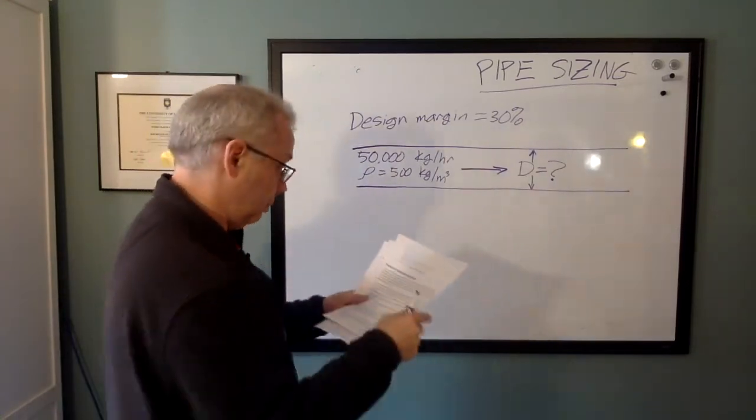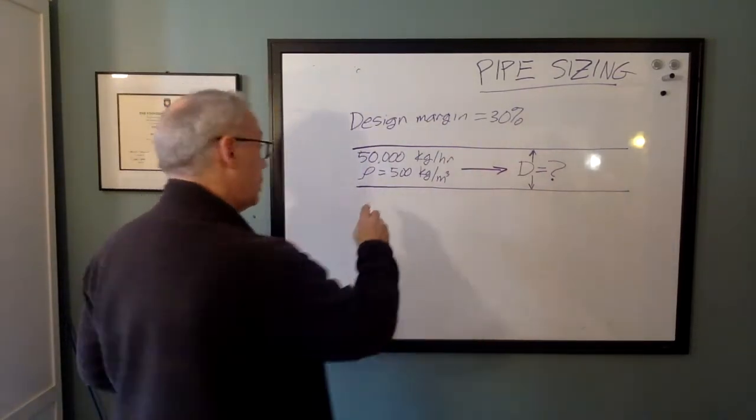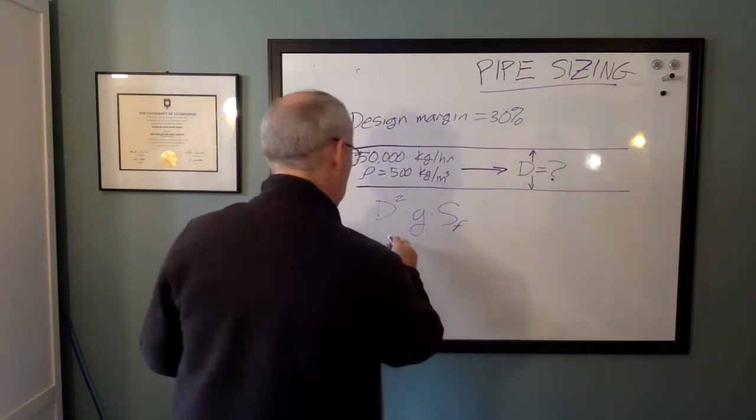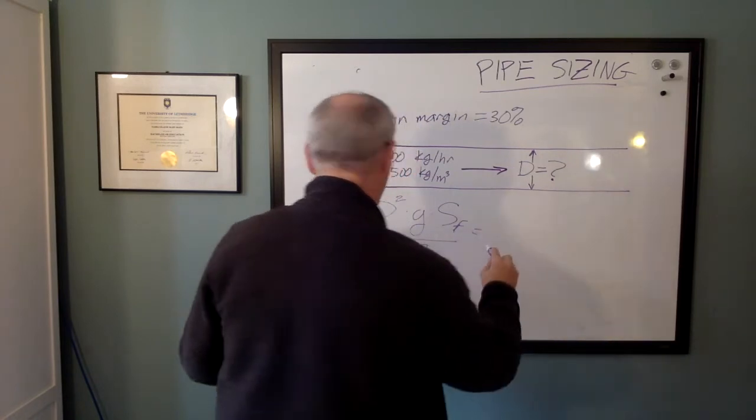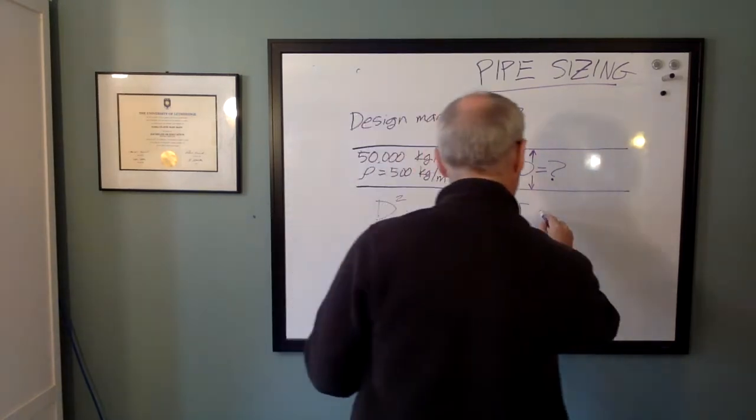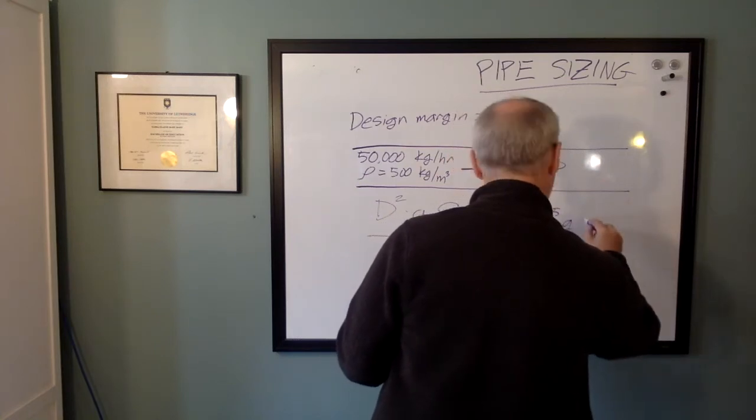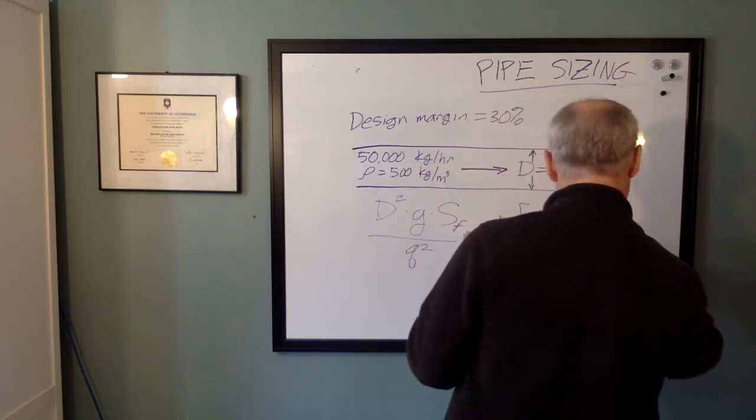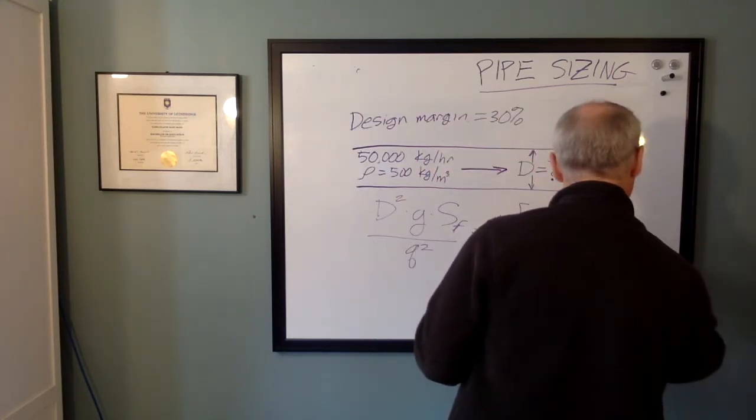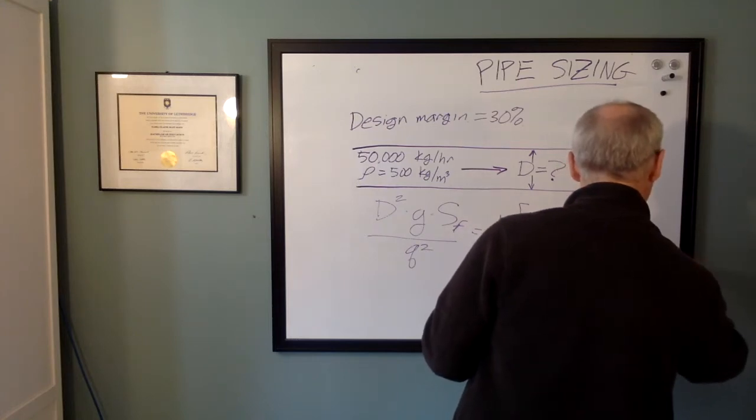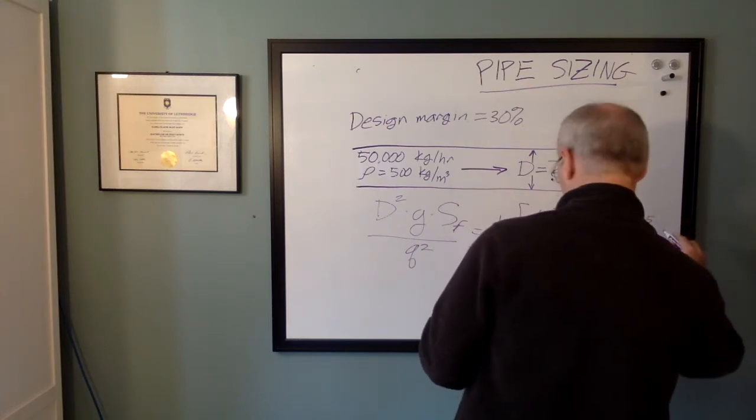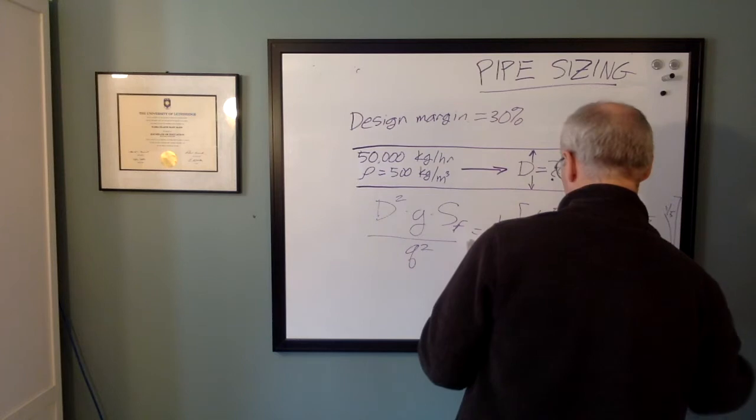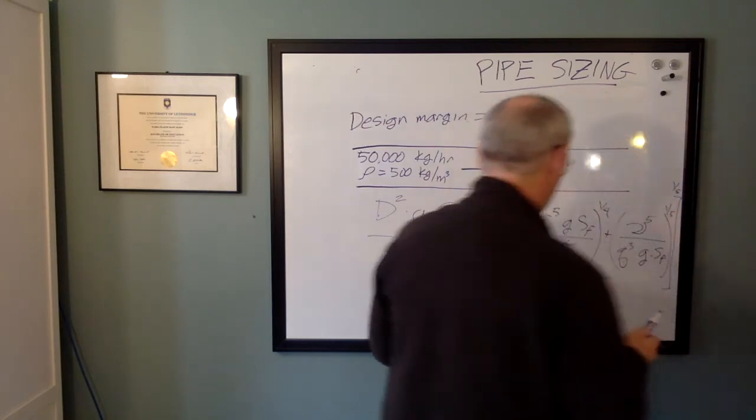So Swami and Jain did this a little differently. Here's what they came up with as a decent fit. Diameter squared times G Sf over Q squared is equal to 1.8 times roughness to the fifth power, gravity Sf divided by Q squared, and that's to the one-quarter power, plus Q cubed G Sf, and that is under the kinematic viscosity to the fifth power, and we're going to take the whole thing to the one-fifth power.